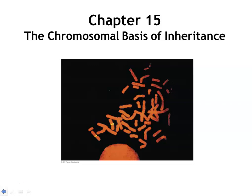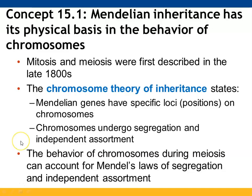Chapter 15 is going to focus on the chromosomal basis of inheritance. Section 15.1 is going to connect what we learned with Mendel, keeping in mind that when Mendel did his work, he did not know about DNA and he did not know about chromosomes. We're going to take what Mendel described with his pea plants and see how that connects to what we now know is present in cells with chromosomes.